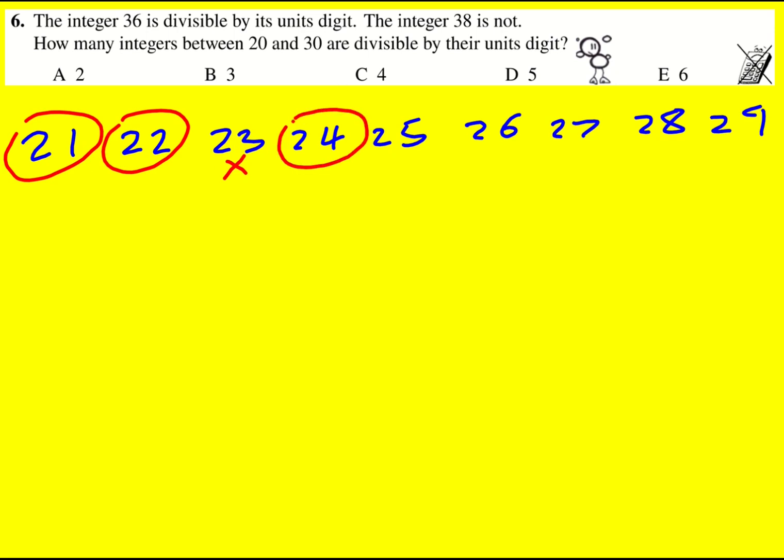24, 4 times 6. 25, 5 times 5. 26 is not divisible by 6. 27 is not divisible by 7. It's 3 times 9.